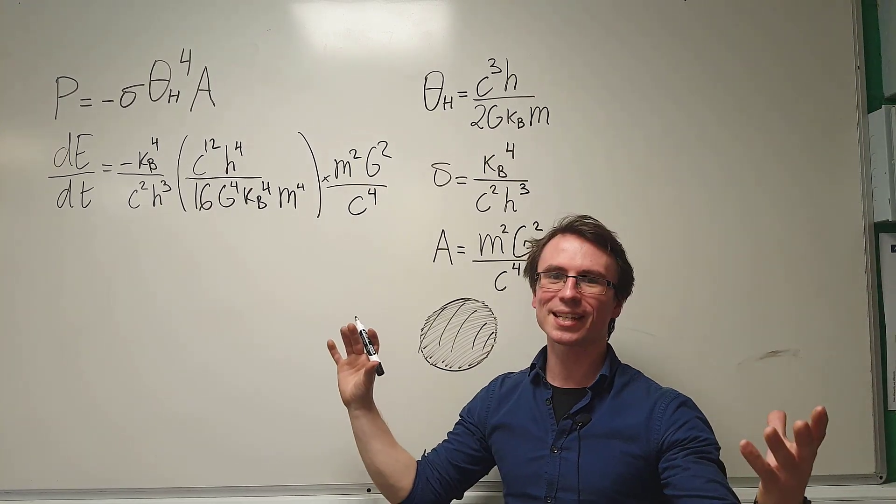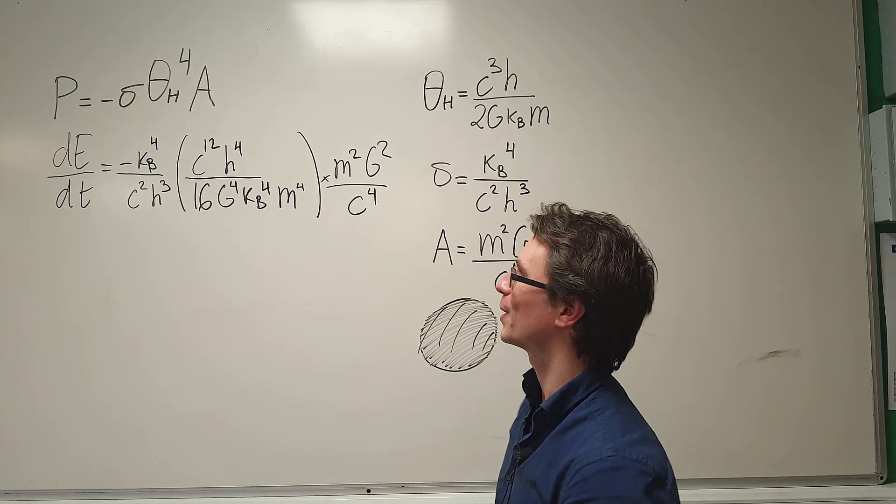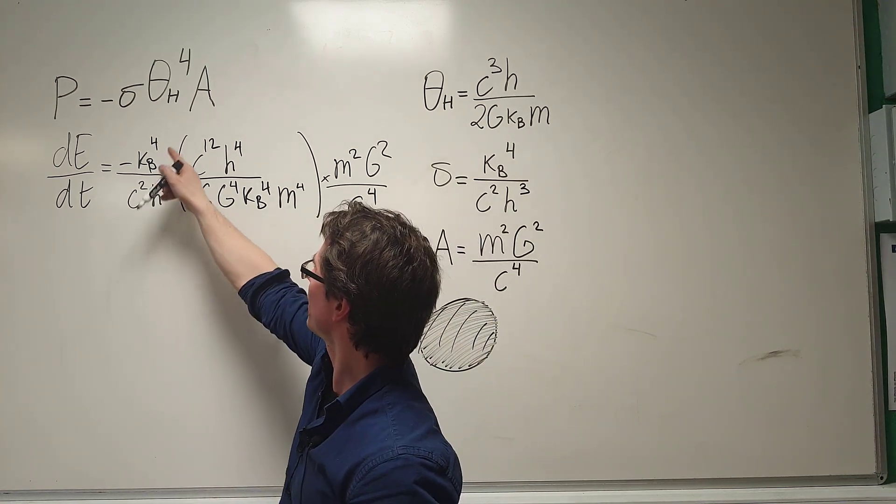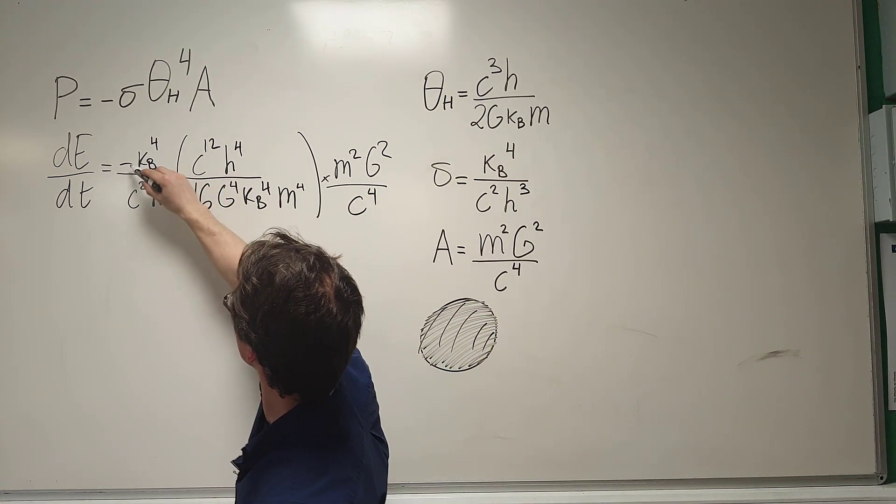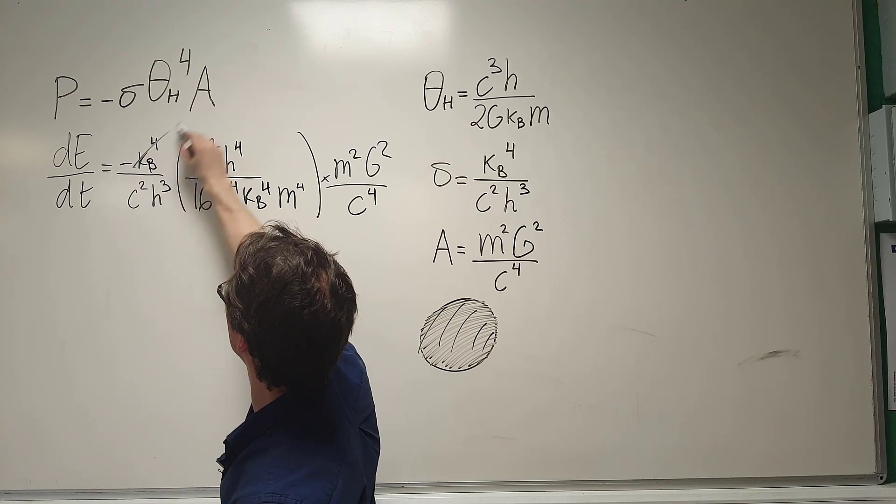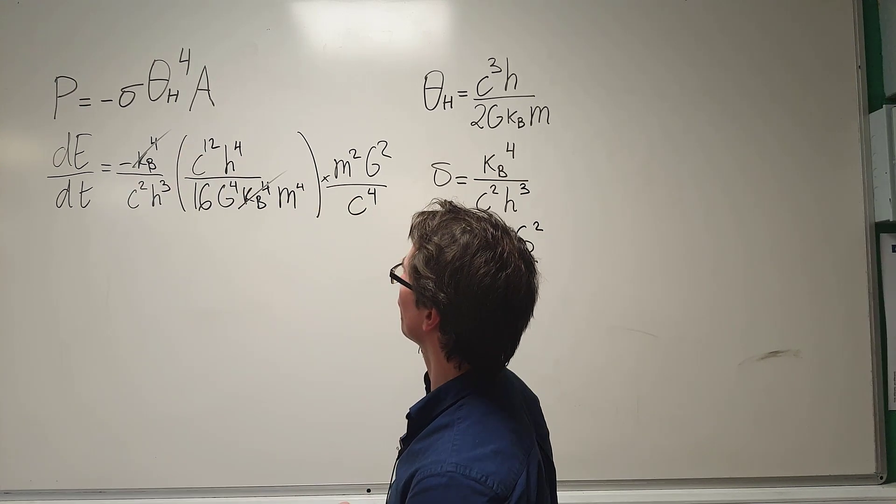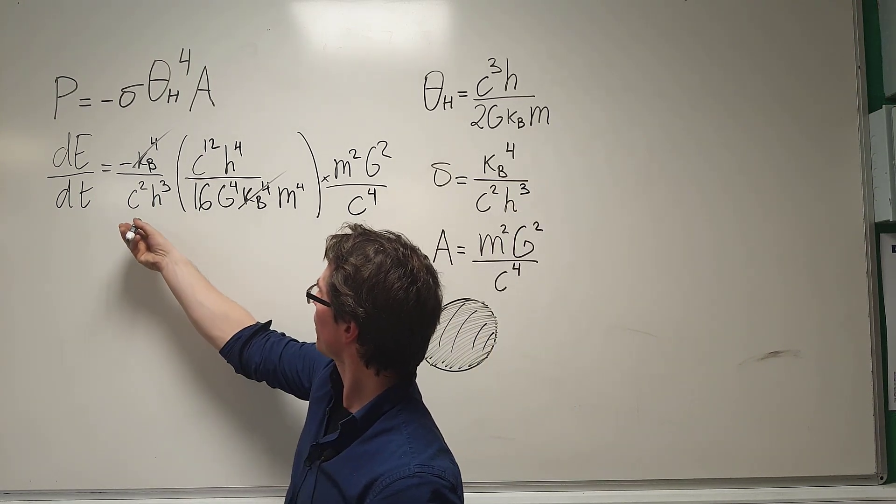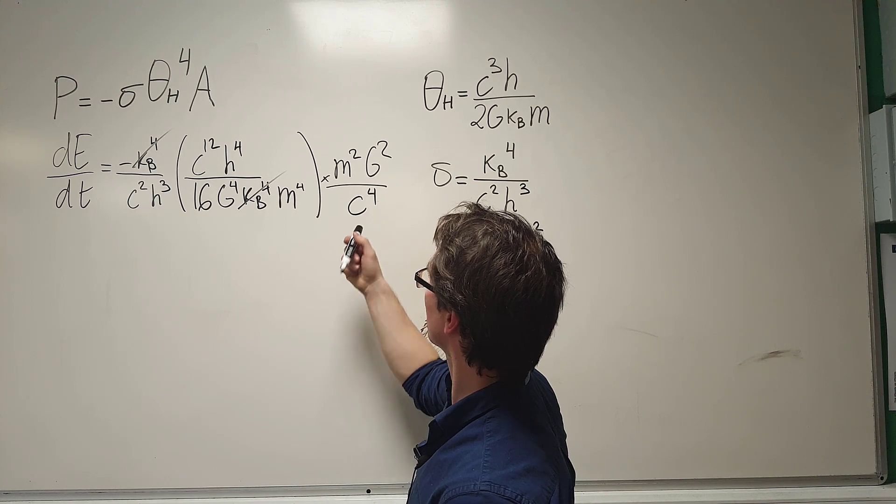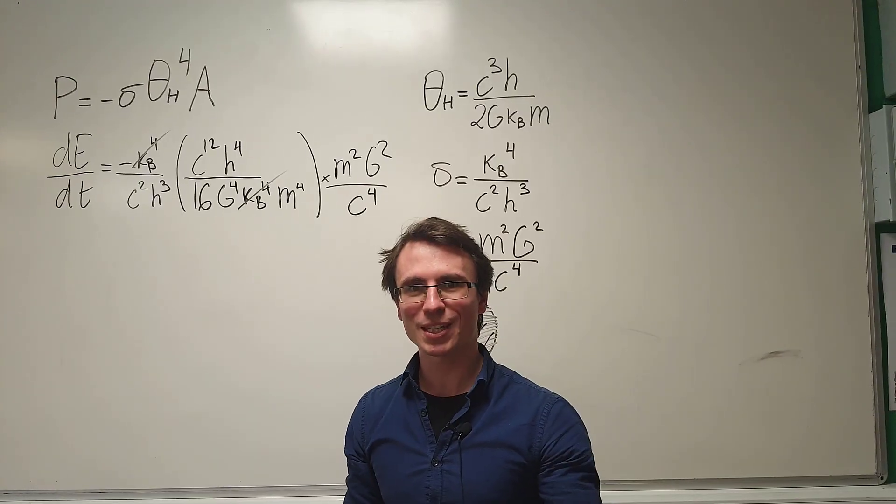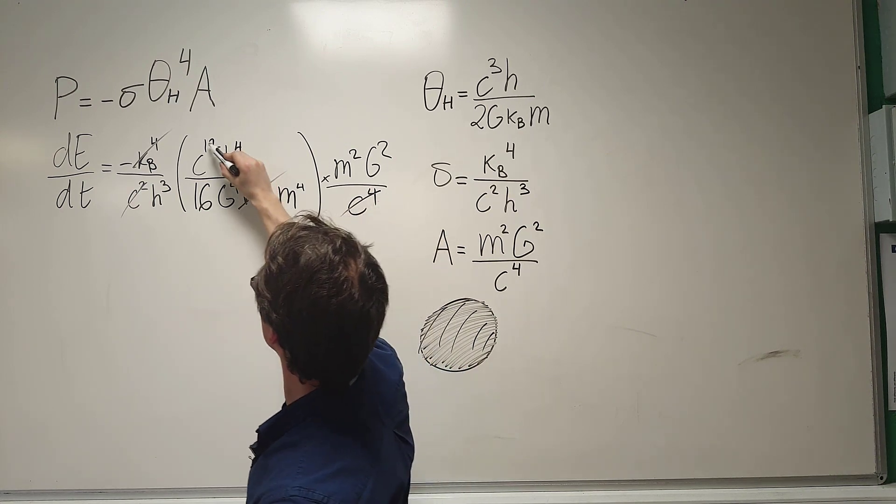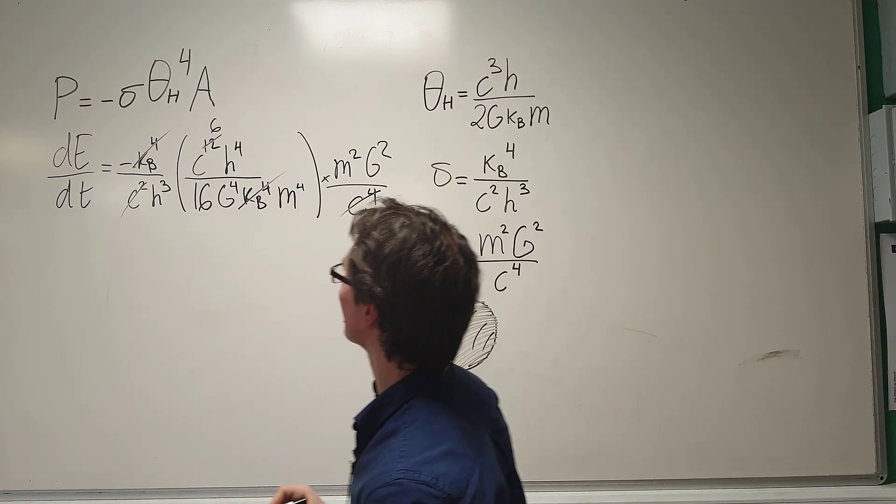Now, I can do one of my favorite things in physics and calculus, and that will be to be canceling terms out of an equation. We can see that Kb to the power of 4, Kb to the power of 4. So, this here can be gone. Now, let's have a look at the term of the speed of light, C. We have C squared. We have C to the power of 4. Together, they're going to give us C to the power of 6, which means that those are going to cancel, and that's going to leave us a term of C to the power of 6 up here.